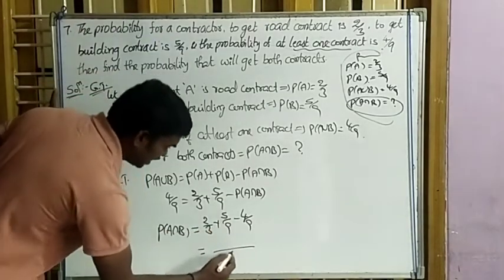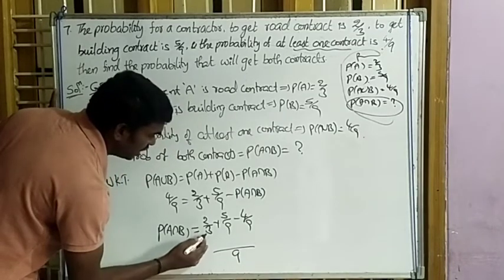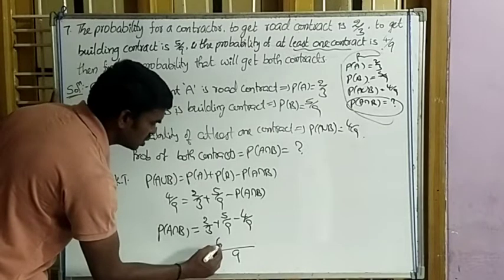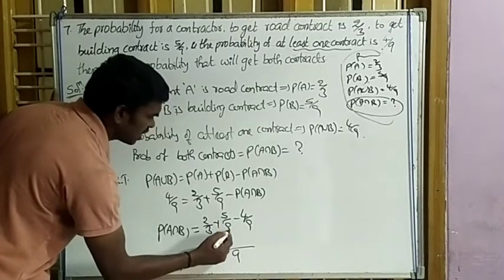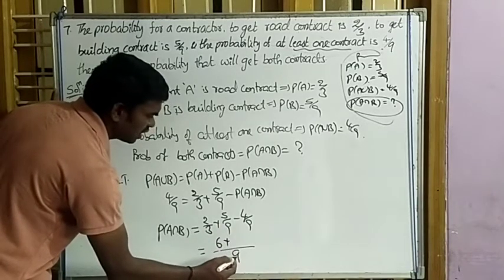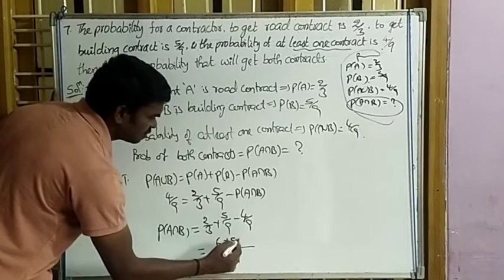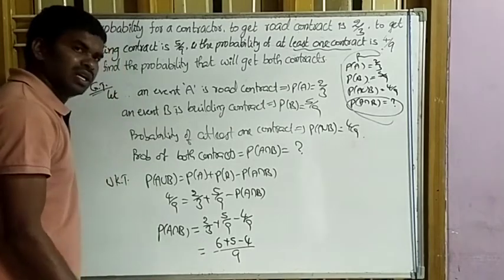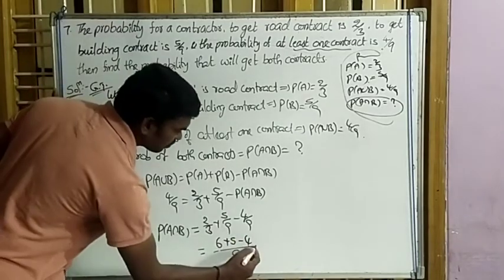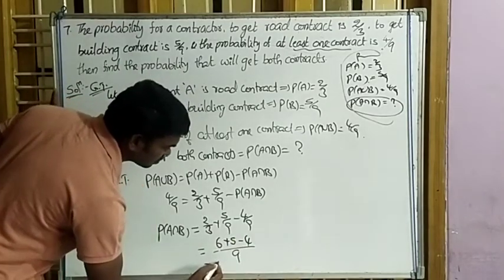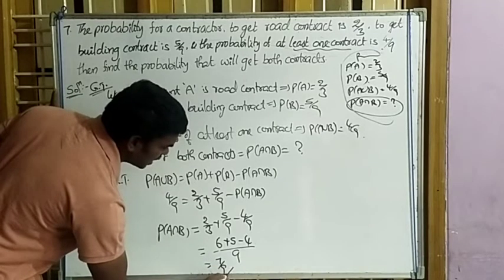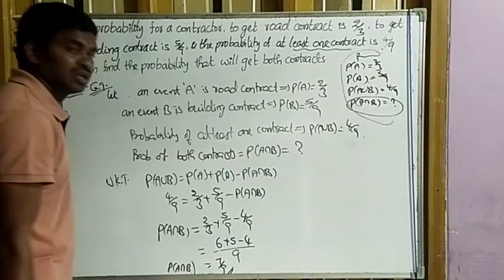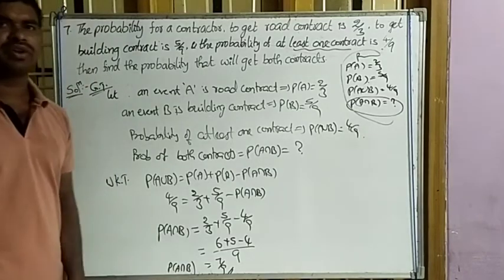LCM of 3 and 9 is 9. So 2/3 = 6/9. Then 6/9 + 5/9 − 4/9 = 11/9 − 4/9 = 7/9. So P(A∩B) = 7/9 is the required answer.